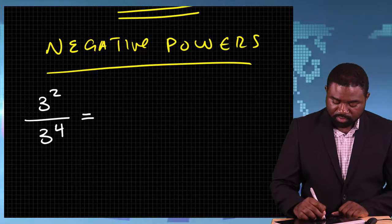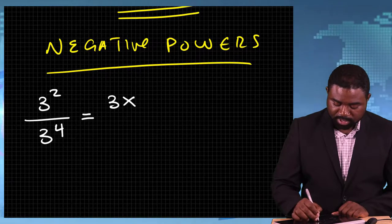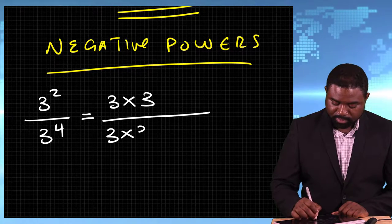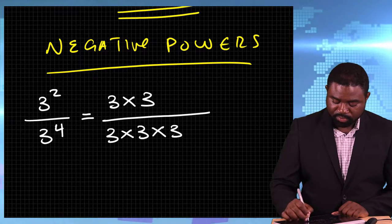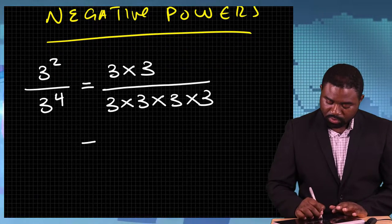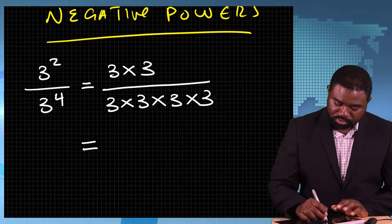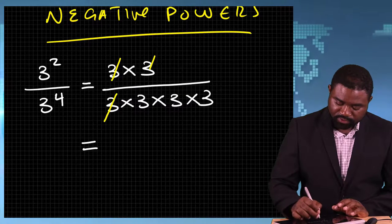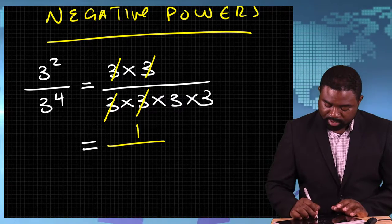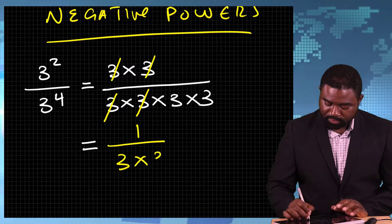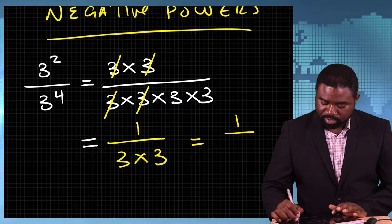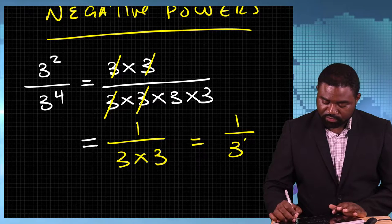Just like we did before, this is 3 multiplied by 3 divided by 3 multiplied by 3, multiplied by 3 multiplied by 3. This cancels this, and this cancels this. So this would be 1 divided by 3 multiplied by 3, which is equal to 1 divided by 3 raised to the power 2.